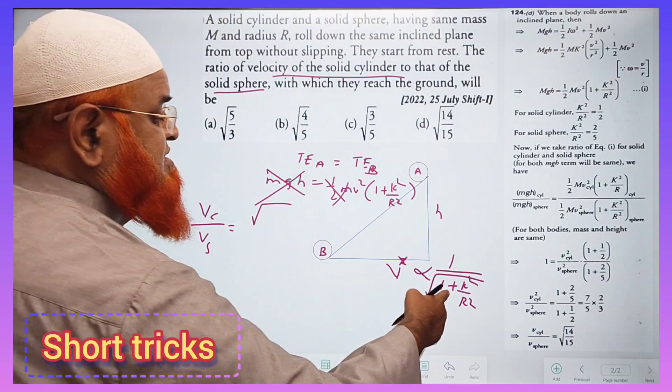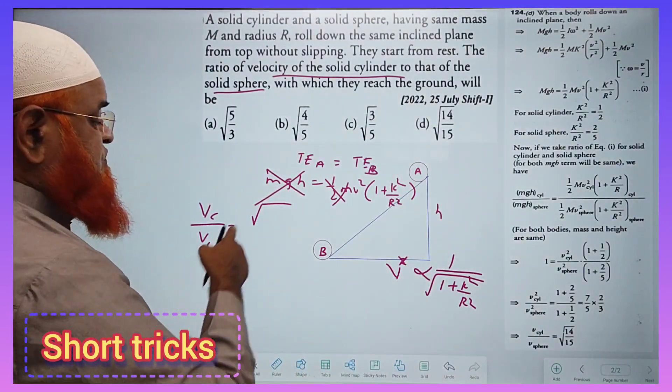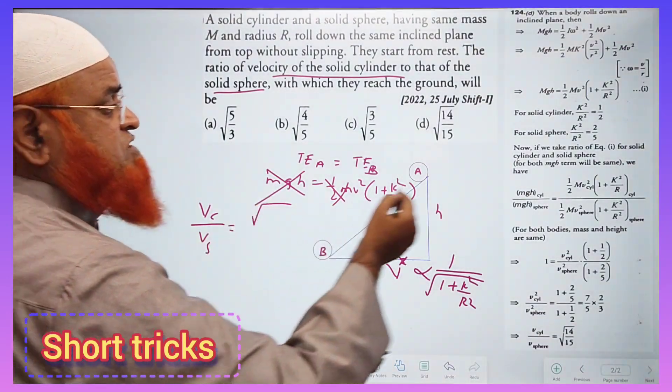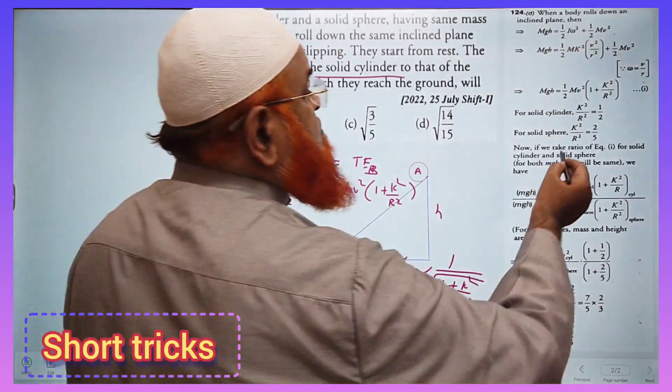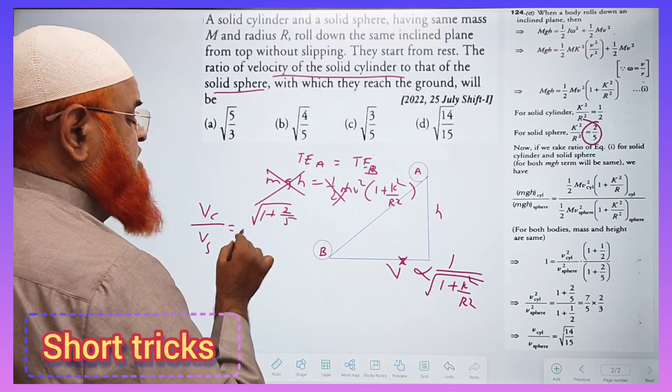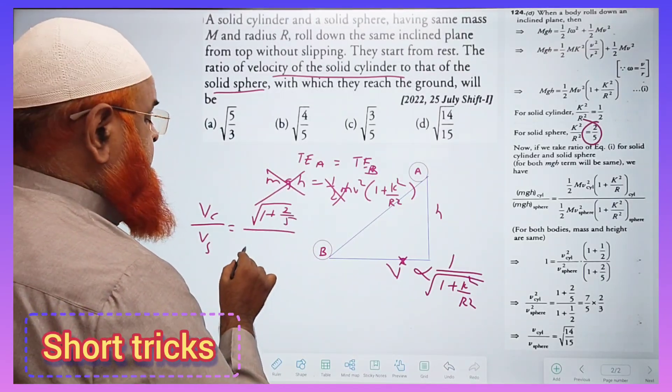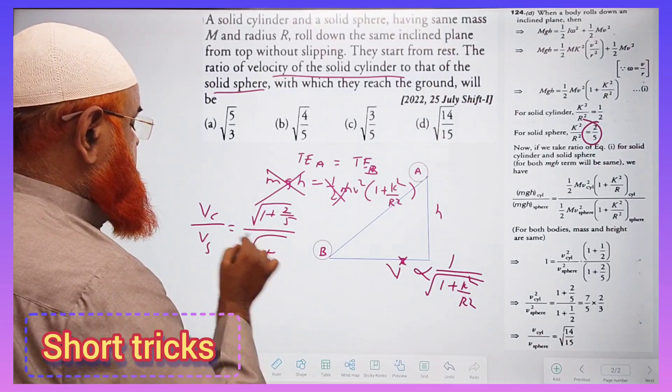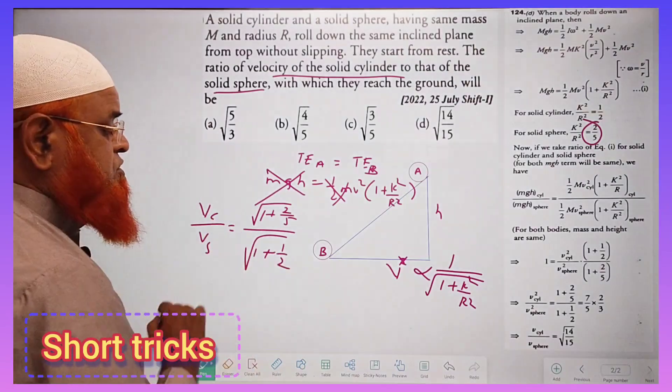So numerator represents a sphere because it is inverse relation. So for sphere you all know that for sphere it is 2/5. So we can write this as square root of (1 plus 2/5) divided by square root of (1 plus 1/2) for cylinder. You know about this.